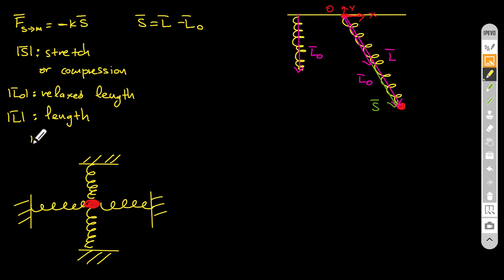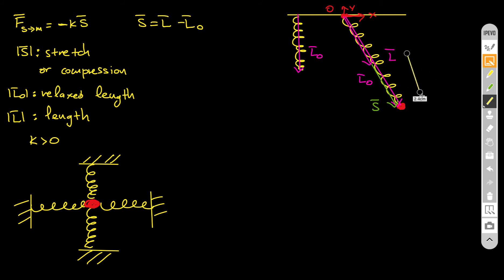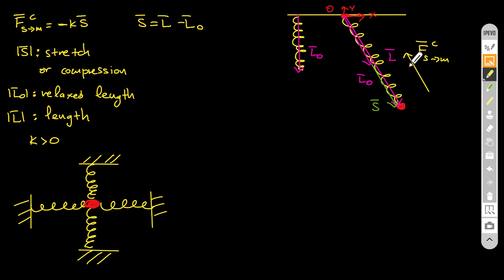Since we always use the spring constant k as a positive number, the force from the spring will point in the opposite direction of s. So minus s gives the direction of the spring force — that is the contact force from the spring on the mass. You can use this process in three dimensions for all x, y, z to find the force vector that the spring exerts on the mass.